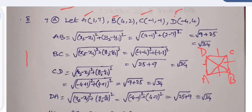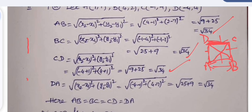AB = √34, BC = √34, CD = √34, and DA = √34 — all four sides are equal. However, equal sides alone are not sufficient to confirm a square, since a rhombus also has four equal sides. So the diagonals must also be checked.